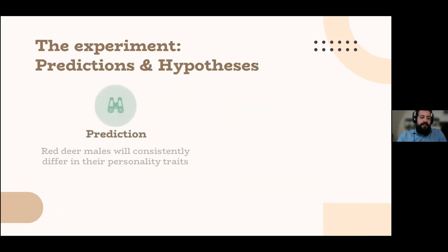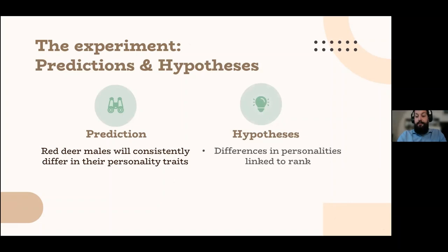And we predicted that red deer males would have consistently differed in their personality traits, hypothesizing differences in personalities linked to rank, specifically having boldest or more aggressive individuals occupying higher ranks in the hierarchy and shyest or less aggressive individuals occupying lower ranks in the hierarchy.